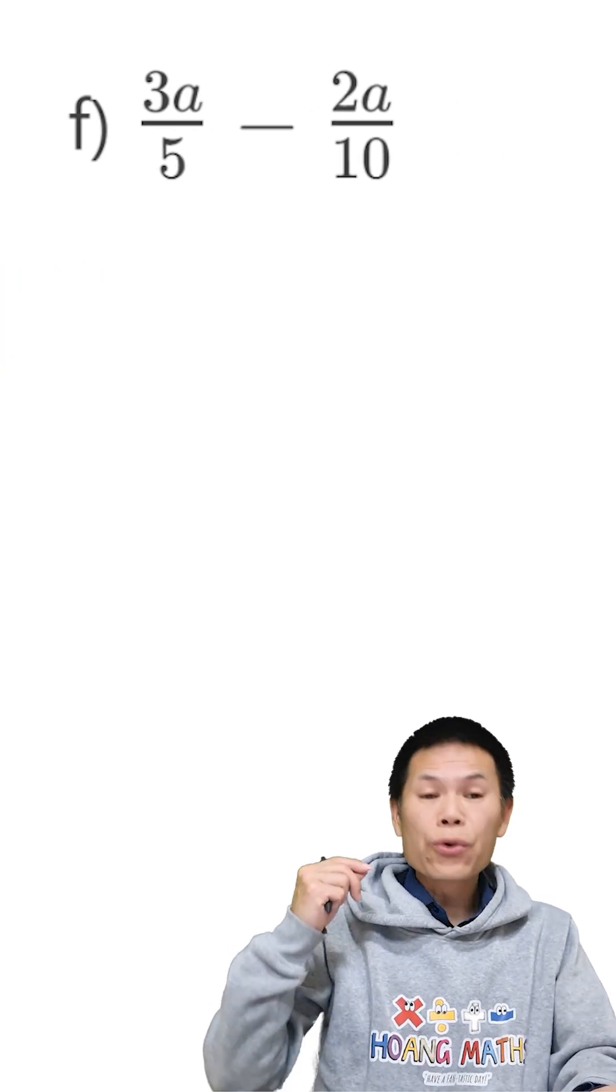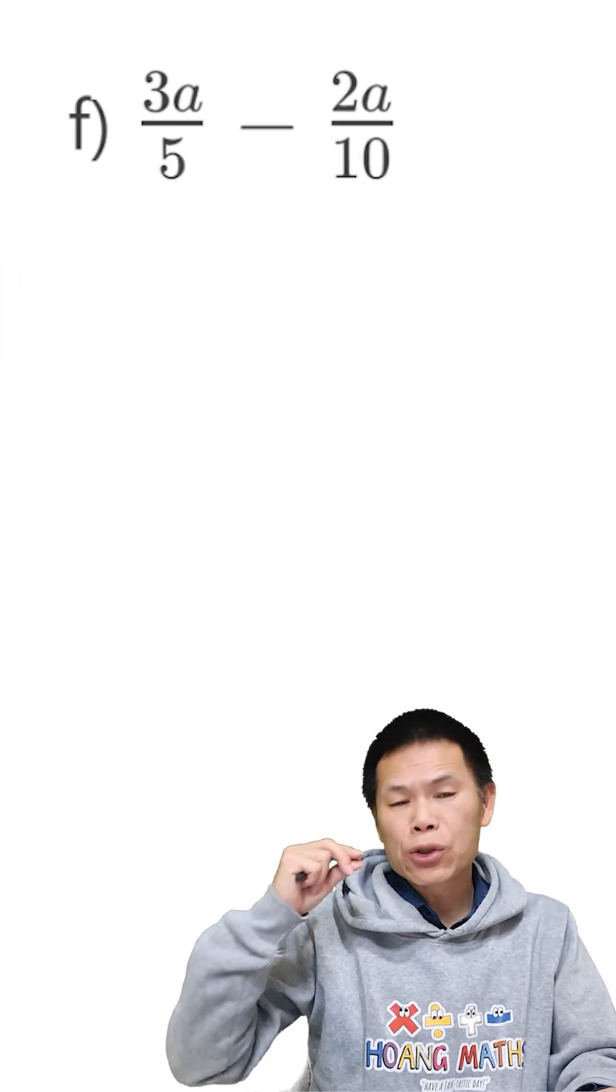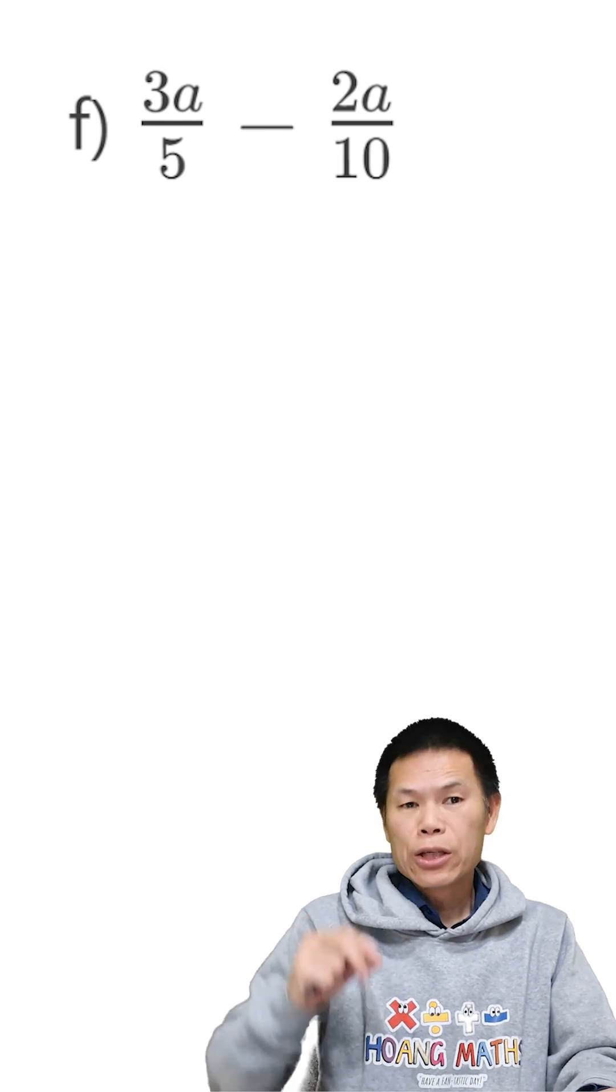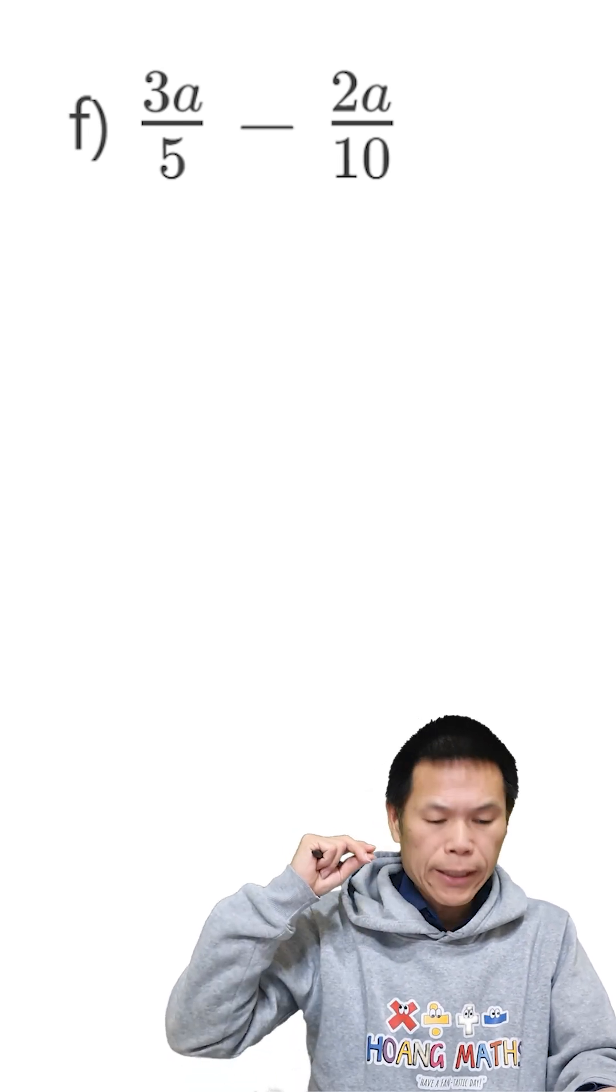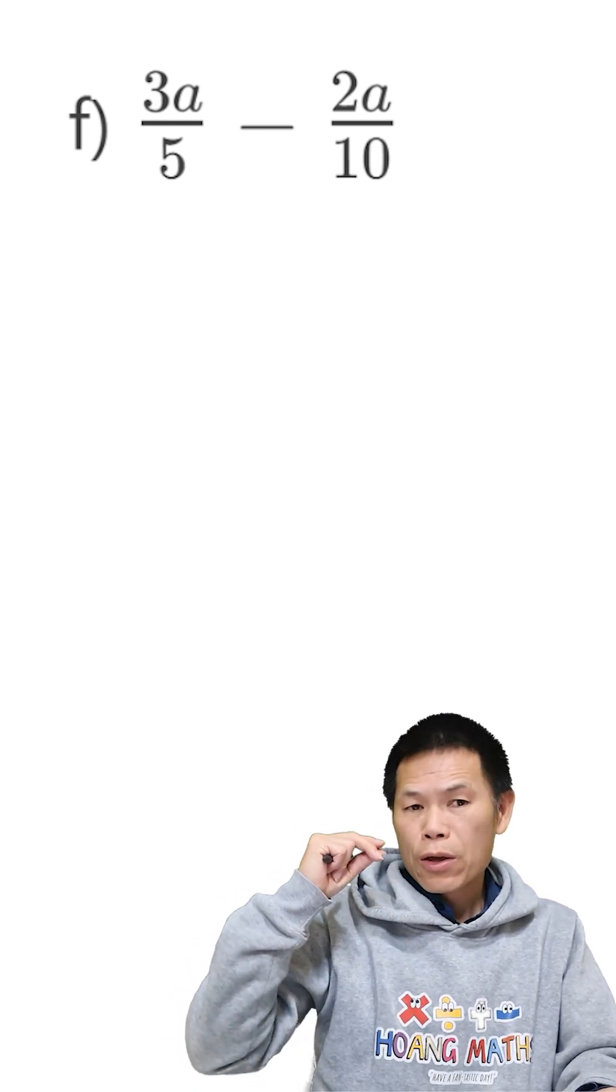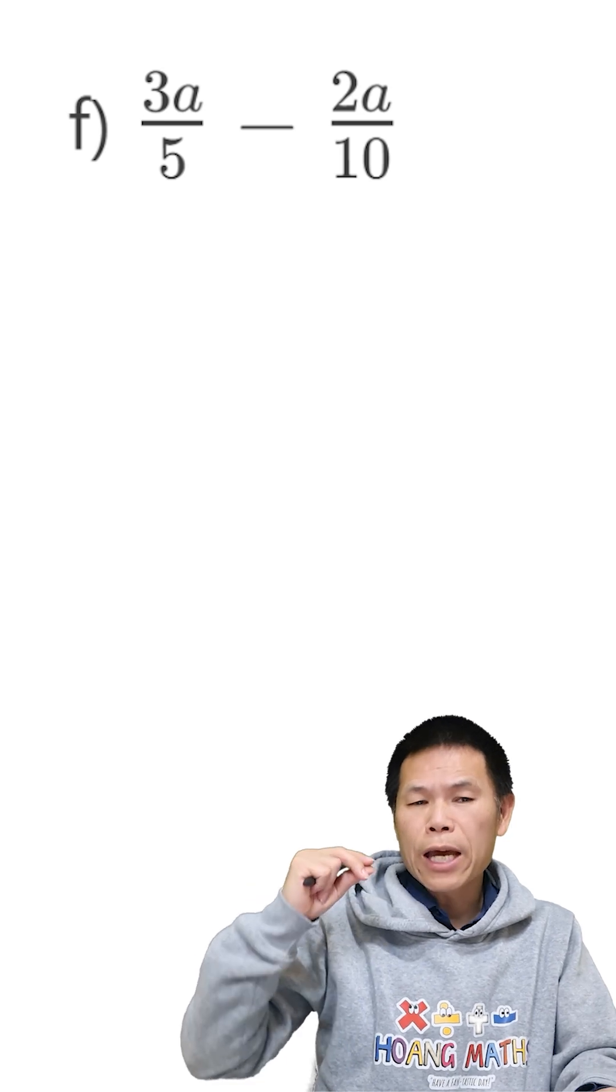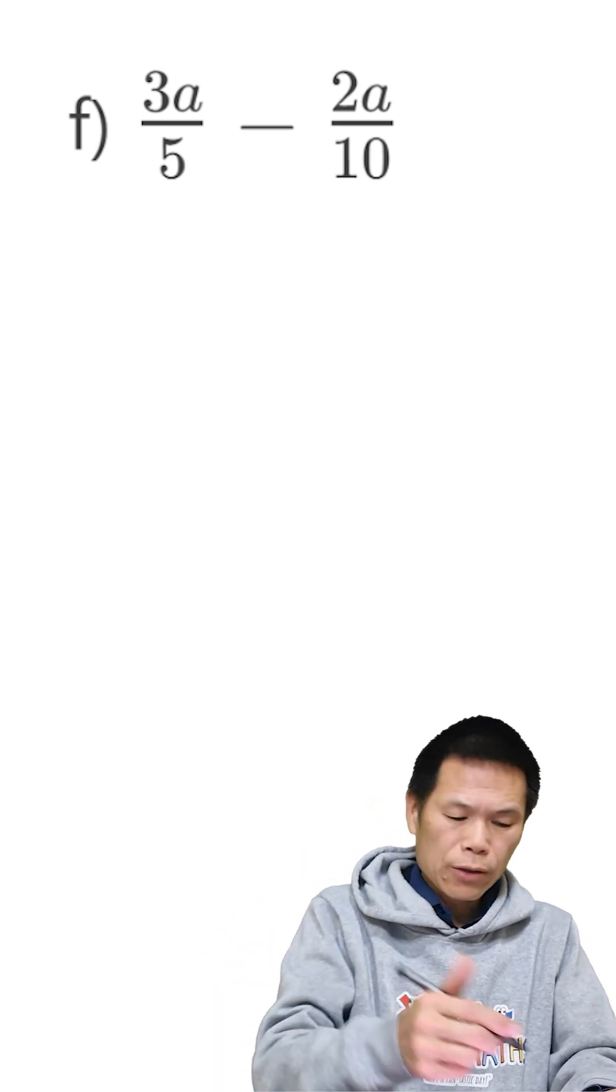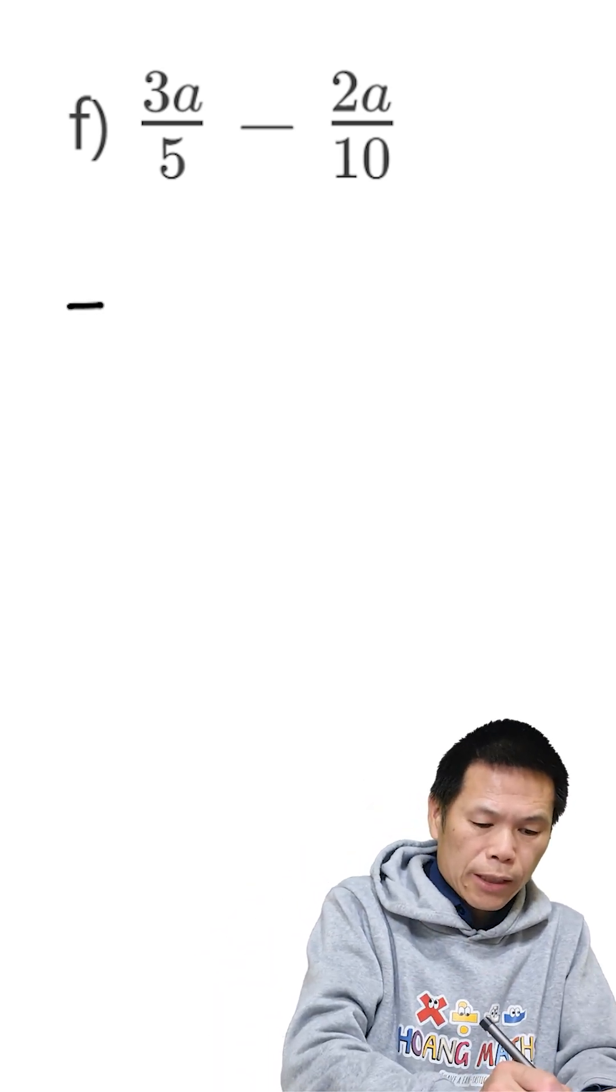We have 3a over 5 minus 2a over 10. The common denominator is 10 because 10 is a multiple of 10 and 10 is a multiple of 5. So that is equal to...